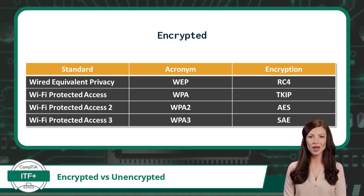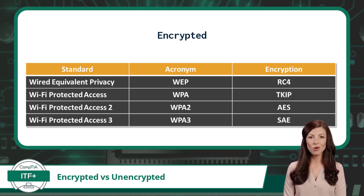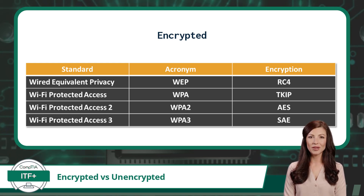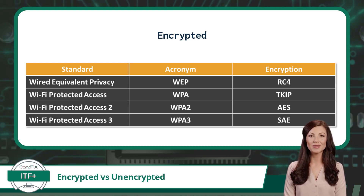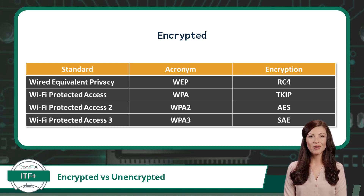First up, we have WEP, or Wired Equivalent Privacy. This is the oldest and weakest of the encryption standards. WEP used an RC4 encryption mechanism, which had some serious security flaws and could be easily cracked by determined hackers. So it's best to avoid using WEP and opt for a more secure option.